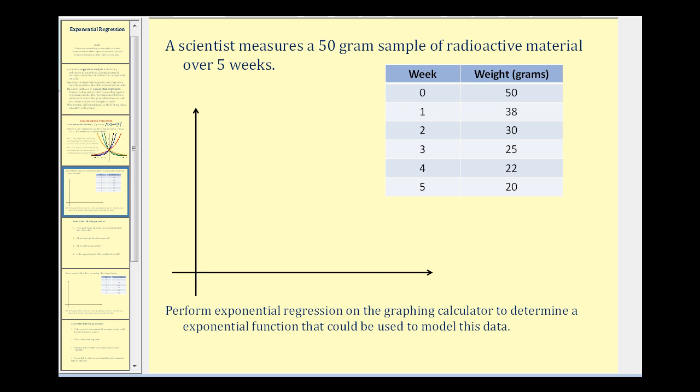Here we have some data that measures the weight of a sample of radioactive material over a period of five weeks. In the previous videos, we created a scatter plot by hand, but for this example, we'll go ahead and create the scatter plot directly onto the graphing calculator.